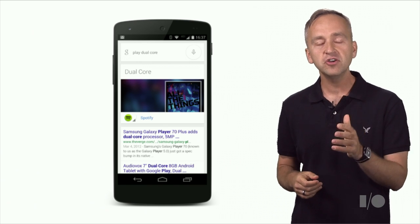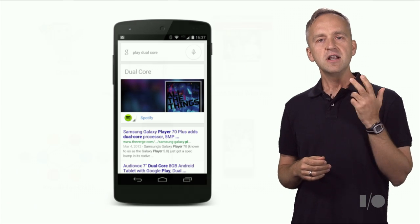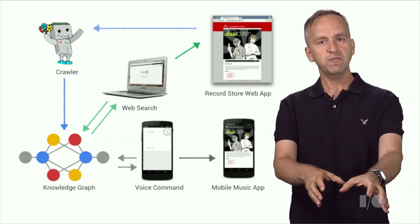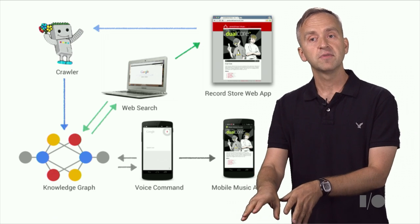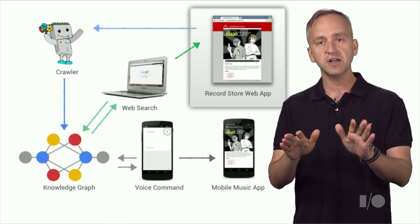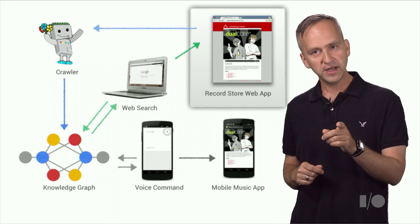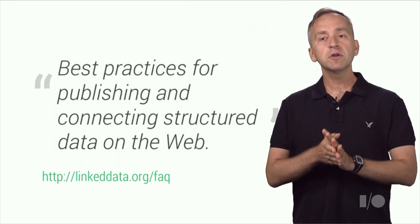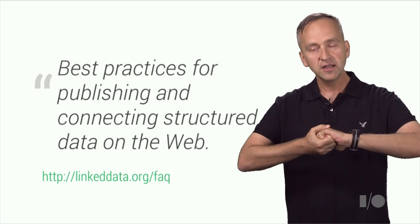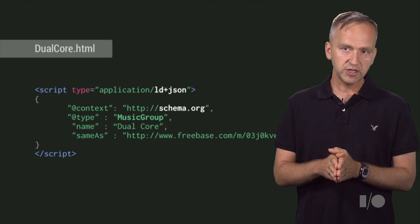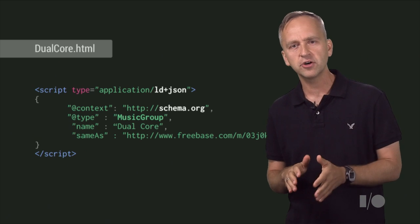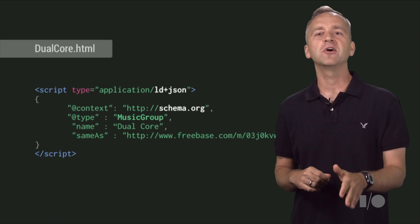How do we express this information in a machine-readable way, and how will it be used? Let's look at a simple architecture diagram. The flow of information is illustrated by the direction of the arrows. The crawler fetches data from our music website and saves it in the knowledge graph. The graph is then consulted when a user issues a voice command or a web search. Sean and I published this information about our music artists and albums on our store website. Rather than inventing a new publishing format, we will apply the linked data principles. The term linked data refers to a set of best practices for publishing and connecting structured data on the web.